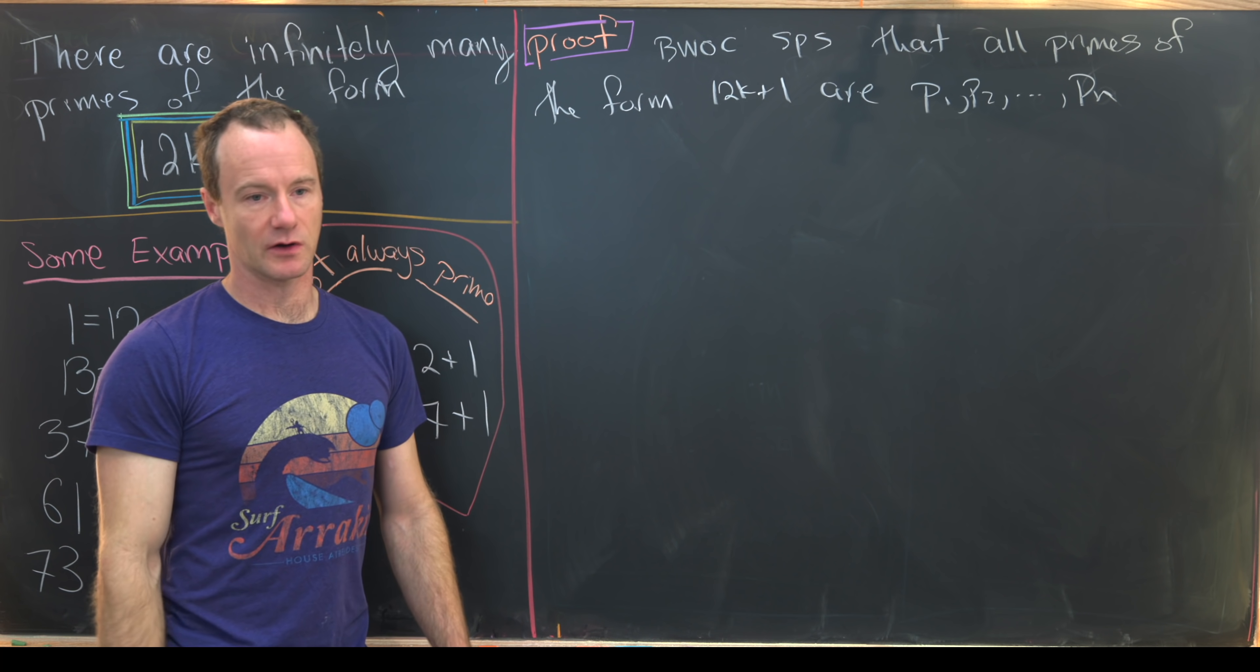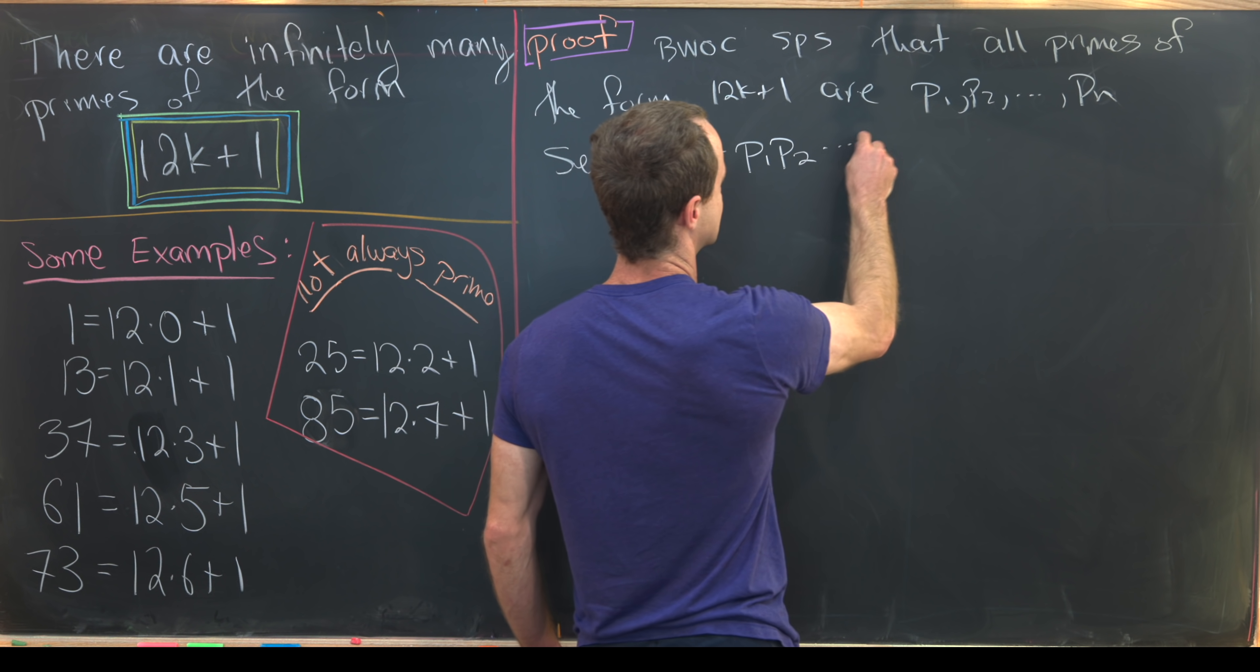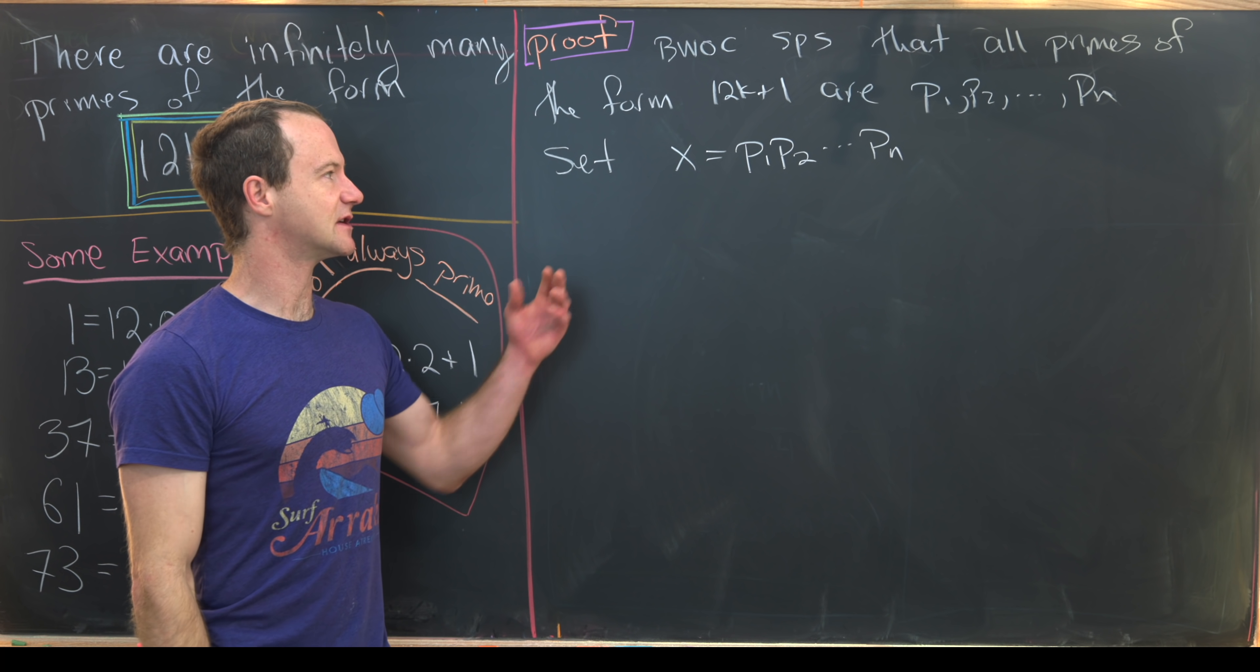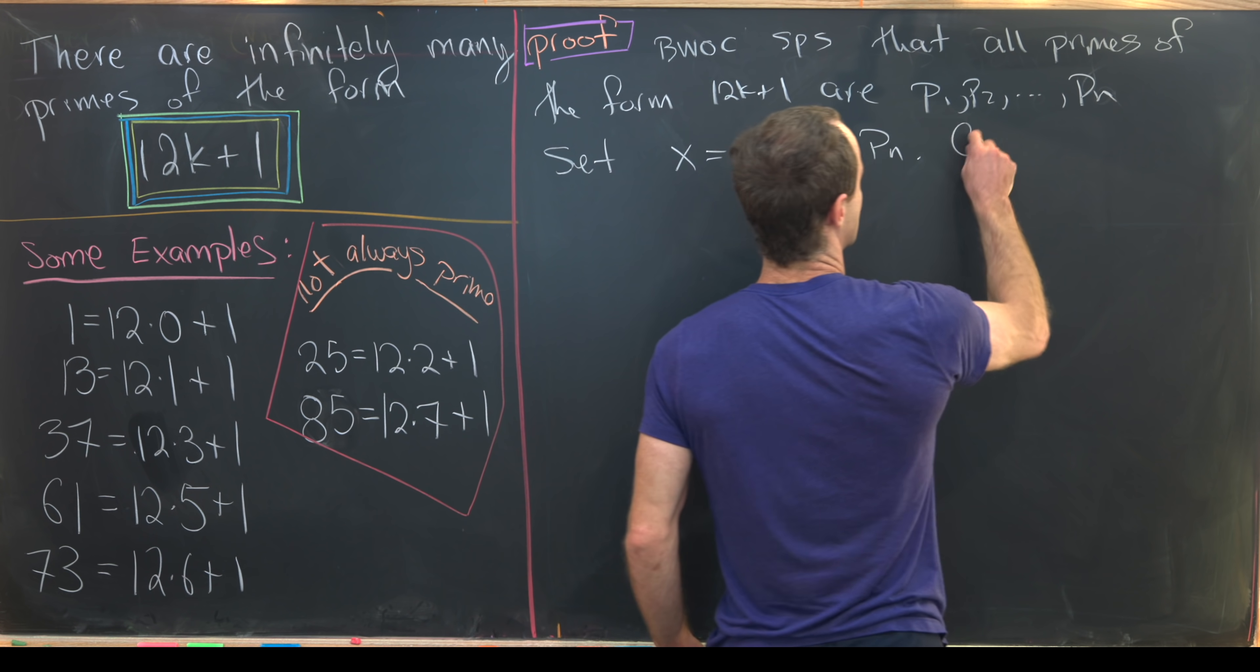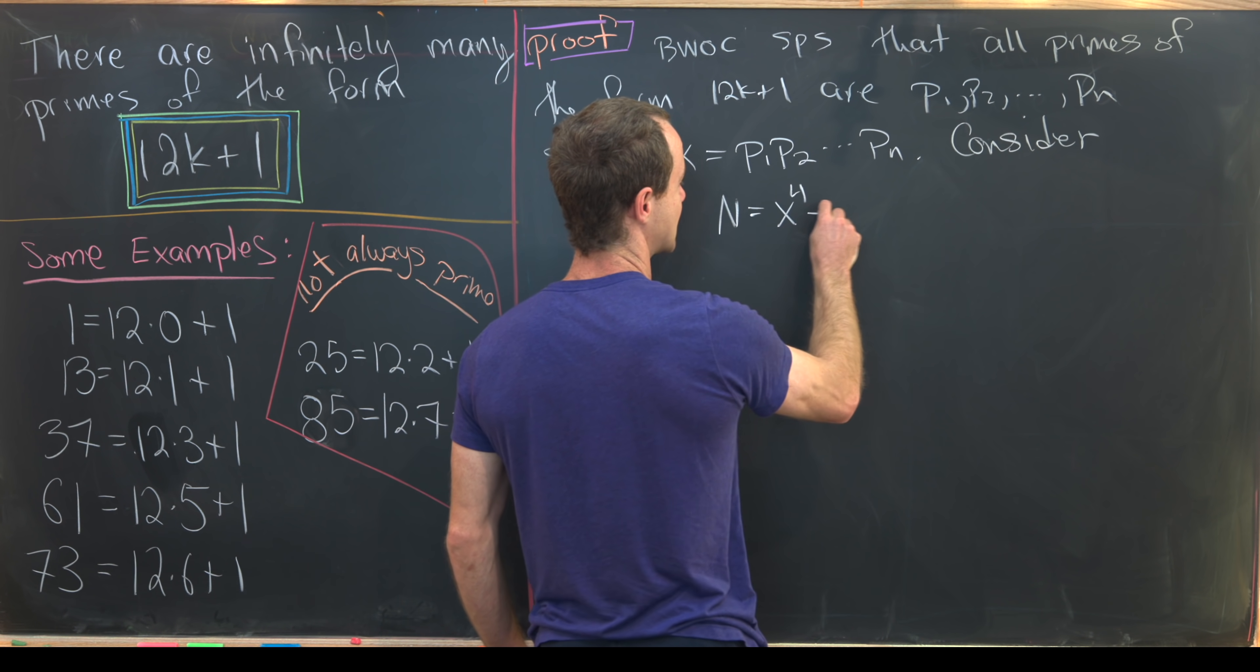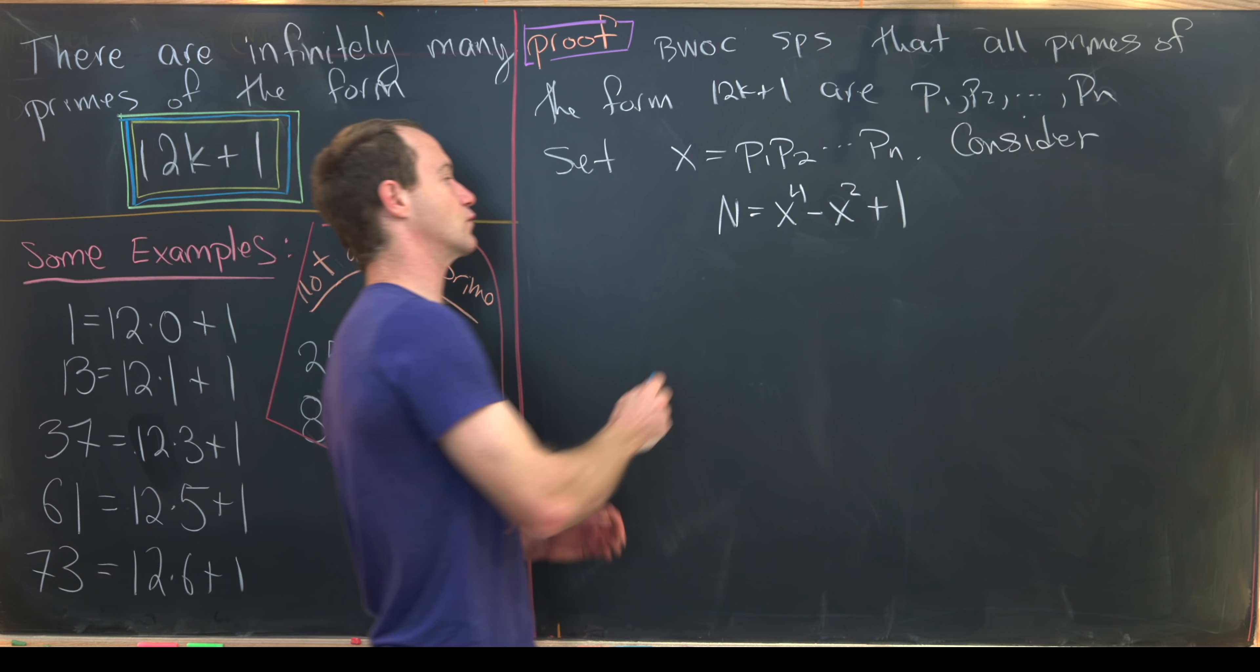Well, that's finitely many. And now we want to set a number which I'll call x equal to the product of all of these. So these are standard first steps for primes of the form proofs. Now we're going to consider a polynomial built out of x. And we'll give that a name n. So we're going to consider the following number. I said we'll call it n. So this will be x to the fourth minus x squared plus 1. That seems like it might have come out of nowhere, but this will actually be really helpful.